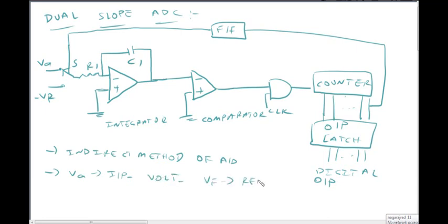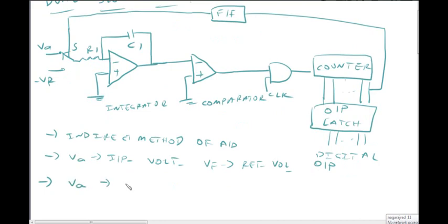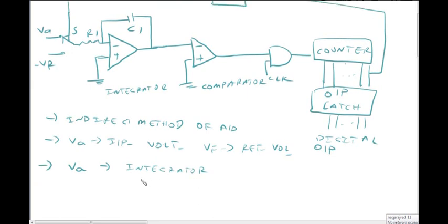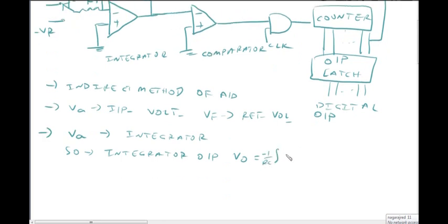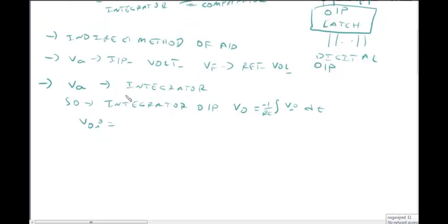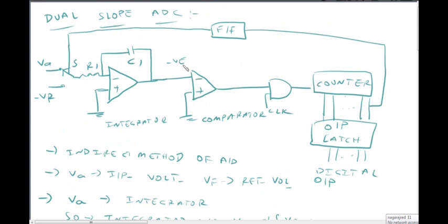In this circuit, Va is the input analog voltage and VR is the reference voltage. The switch S is connected to Va. The integrator output V0 equals the integral of minus 1 by RC times Vi dt. So V0 equals minus 1 by R1C1 times the integral of Va dt, which gives V0 equal to minus Va times t divided by R1C1. This is equation number 1. The output is negative.